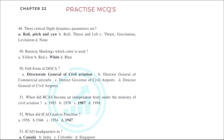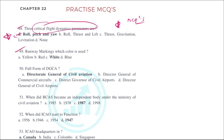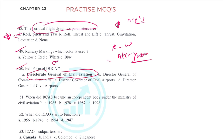The three critical flight dynamic parameters are pitch, roll, and yaw. Runway markings are white in color — runway is white, apron and taxiway are yellow. The full form of DGCA is Directorate General of Civil Aviation.